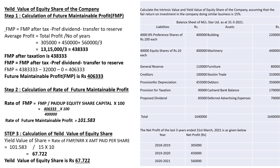Step two is calculation of the rate of future maintainable profit. The formula is: Rate of FMP = FMP ÷ Paid-up equity share capital × 100. FMP is 4,06,333.33 and paid-up equity share capital is 4 lakh. So 4,06,333.33 ÷ 4,00,000 × 100 = 101.583%. The rate of future maintainable profit is 101.583%.